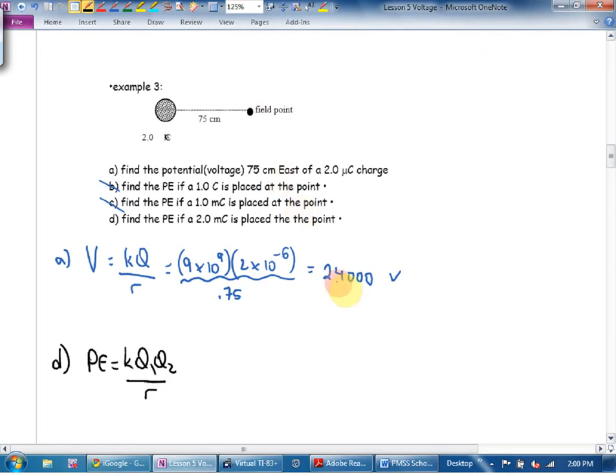You see, we defined voltage as energy per Coulomb, per charge. Get the potential energy by itself. The potential energy at that location is going to be the size of the charge at that location, times the voltage at that location. It's going to be 2 times 10 to the negative 3 times 24,000.